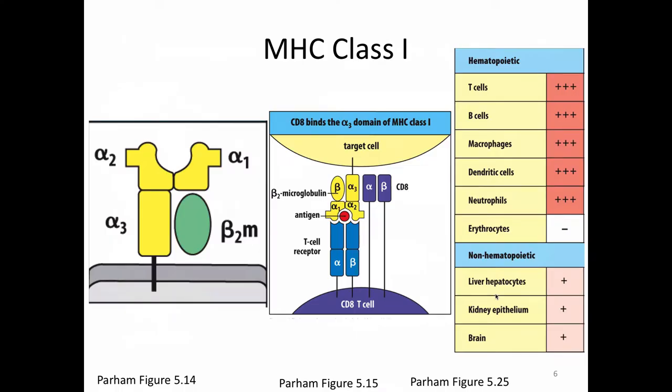Now we'll talk specifically about the MHC class 1 presentation pathway. MHC class 1 has a heavy chain plus a light chain, beta-2 microglobulin, which is non-covalently attached. The heavy chain plus beta-2m does not fold correctly until there is also a peptide present — correct folding requires all three components together. MHC class 1 also binds to CD8, which is why it presents antigen to CD8-positive T cells. This process of MHC class 1 presentation occurs on all nucleated cells in your body.